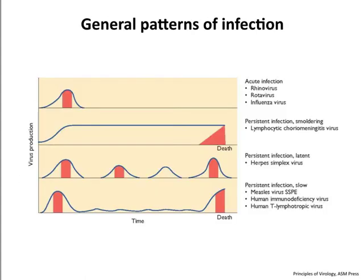Here's the graph from last time. This is an acute infection up here—we're looking at virus production in the blue line and disease in the little red bar. In an acute infection, here's the lifetime of the host: there's a blip of virus production and disease, and it's done. These other three panels are all examples of persistent infections where virus is with you for the lifetime.